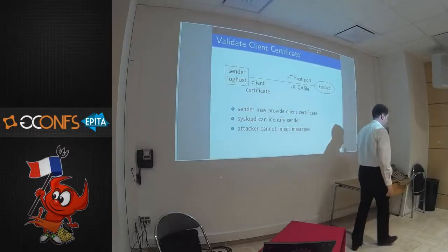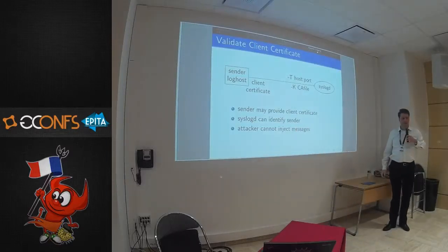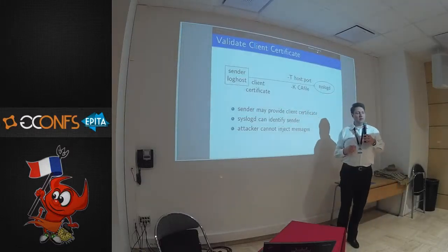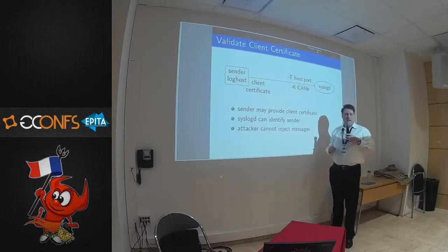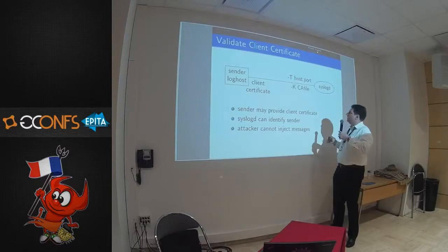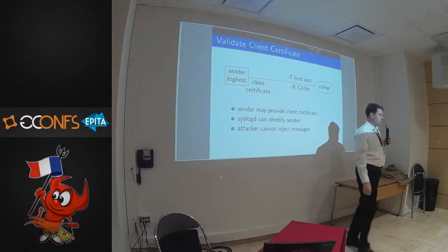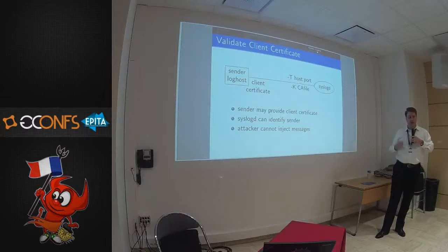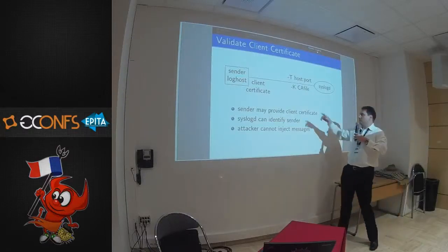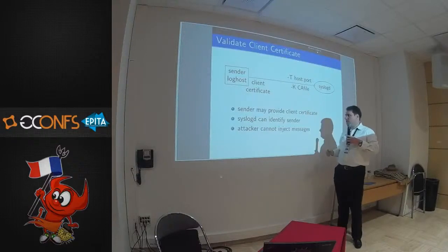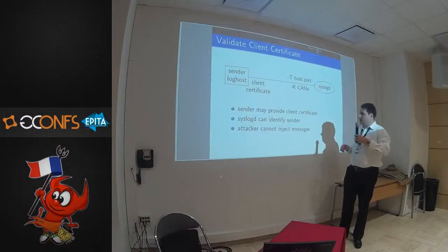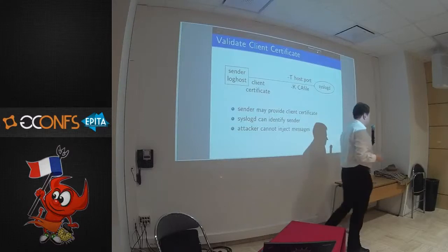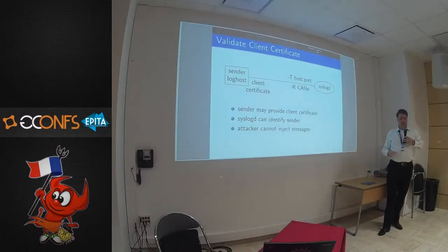Another feature about TLS is client certificates. The client provides a certificate and we want to verify it. First you enable TLS at all and specify a certificate authority file. Every time a sender tries to connect to us, we ask them to show their client certificate. We check whether it's signed with this CA — if it is, we take the message; otherwise we don't. That means syslogd can identify the sender, and the attacker cannot inject messages — nobody else is allowed to send something to us.